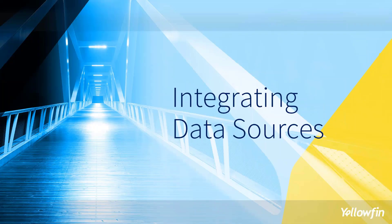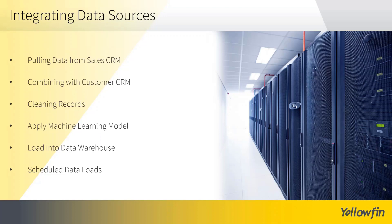And so now let's have a look at a couple of examples. The first example we're going to take a look at is integrating data sources. In this example, we're going to take a look at pulling data out of a sales CRM, combining that data with customer CRM data. We're going to go ahead and clean those records up a bit, and we're actually going to apply a machine learning model that I've prepared to group my customers together so I know who to better target. Then we're going to load that into a data warehouse, and finally I'm going to show you how we can schedule this so that it's all done seamlessly without you needing to worry about it.